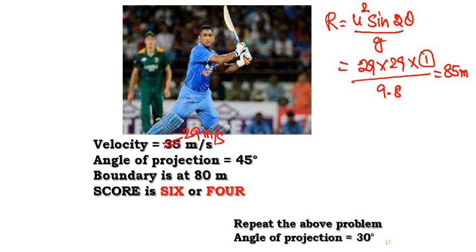So just substitute here. The boundary is at a distance of 80 meters. Since your range is 85 meters and the boundary is at 80 meters, you will score 6.